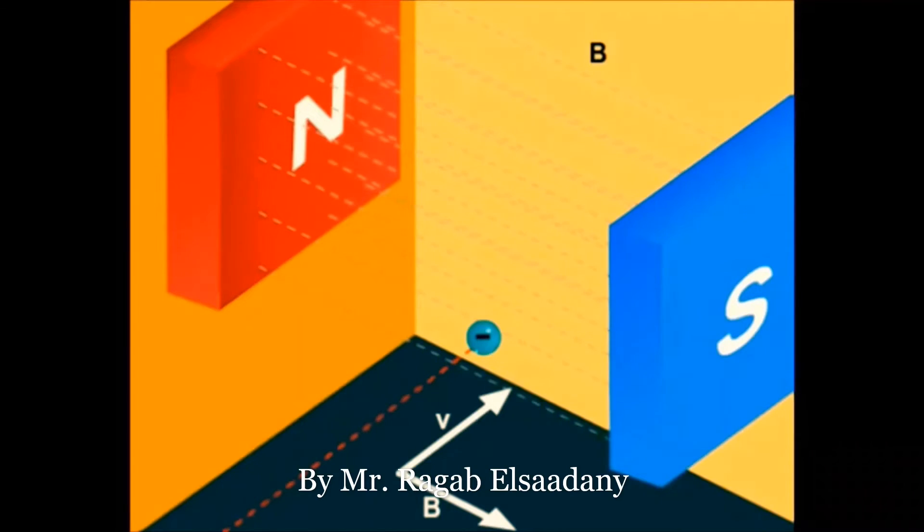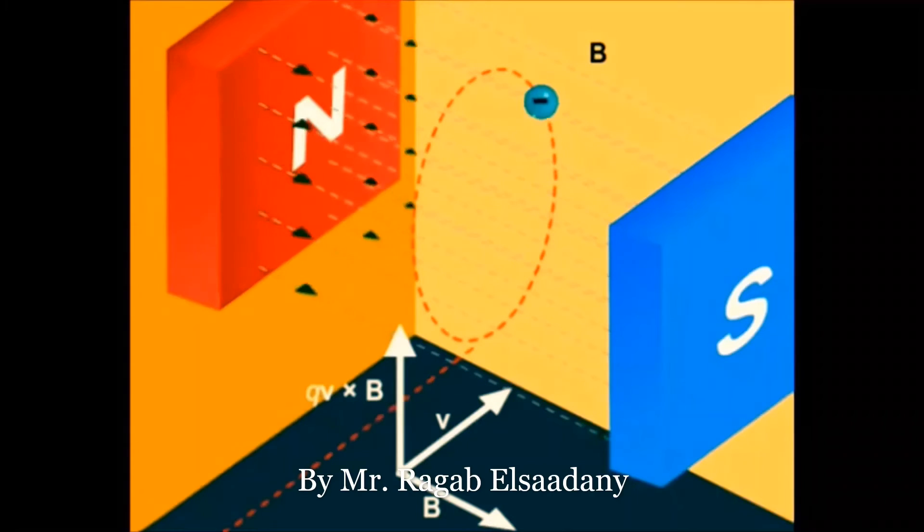Due to the perpendicular force F equals Q V cross B, this force acts as a centripetal force. It will be perpendicular to the velocity, so the charge will move in a circular motion.